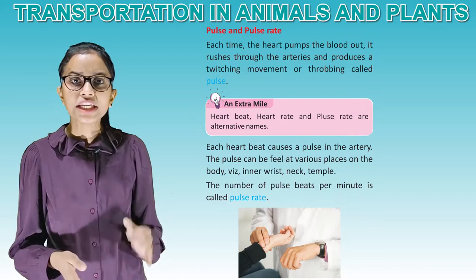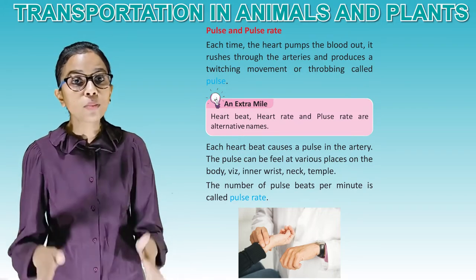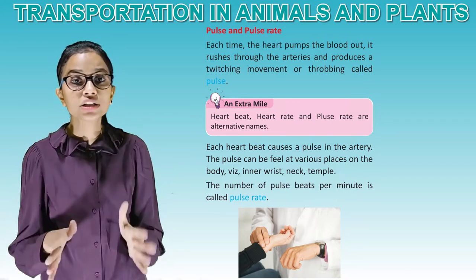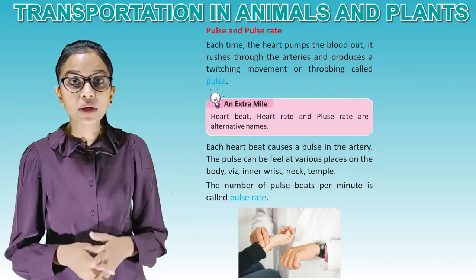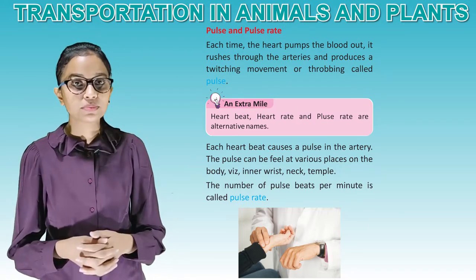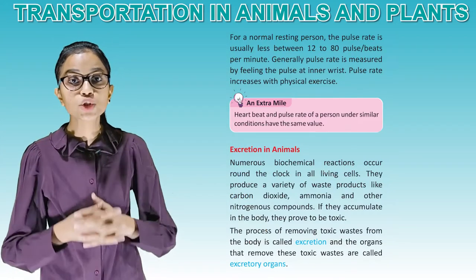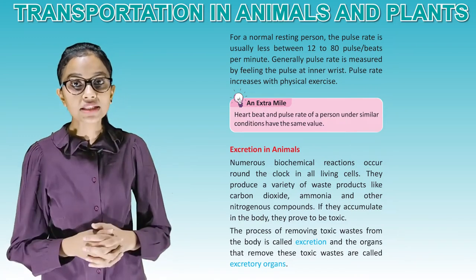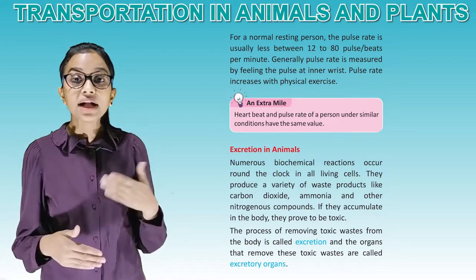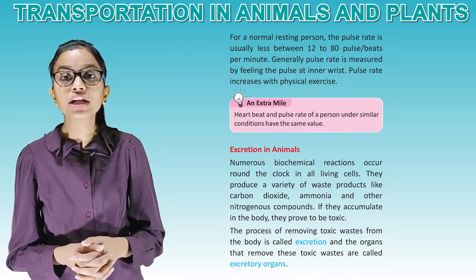Pulse and pulse rate: each time the heart pumps blood out, it rushes through the arteries and produces a twitching movement or throbbing called pulse. Heart rate and pulse rate are alternative names. Each heartbeat causes a pulse in the artery. The pulse can be felt at various places on the body: inner wrist, neck, and temple. The number of pulse beats per minute is called pulse rate. For a normal resting person, the pulse rate is usually between 72 to 80 pulses per minute. Pulse rate is measured by feeling the pulse at the inner wrist. Pulse rate increases with physical exercise. Heartbeat and pulse rate of a person under similar conditions have the same value.